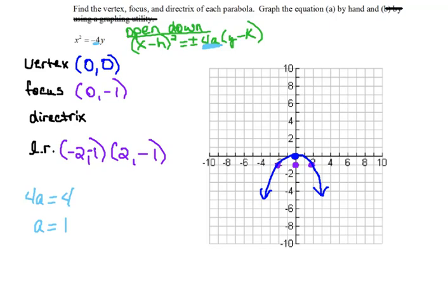We can also list out our directrix, because if it is a units one direction to the focus, it is a units the other direction to the directrix line. So that says it's one unit backwards, or up in this case, to the directrix. So our directrix then would be the line y equals a positive 1. And now we have answered all of the questions and done the graph at the exact same time.